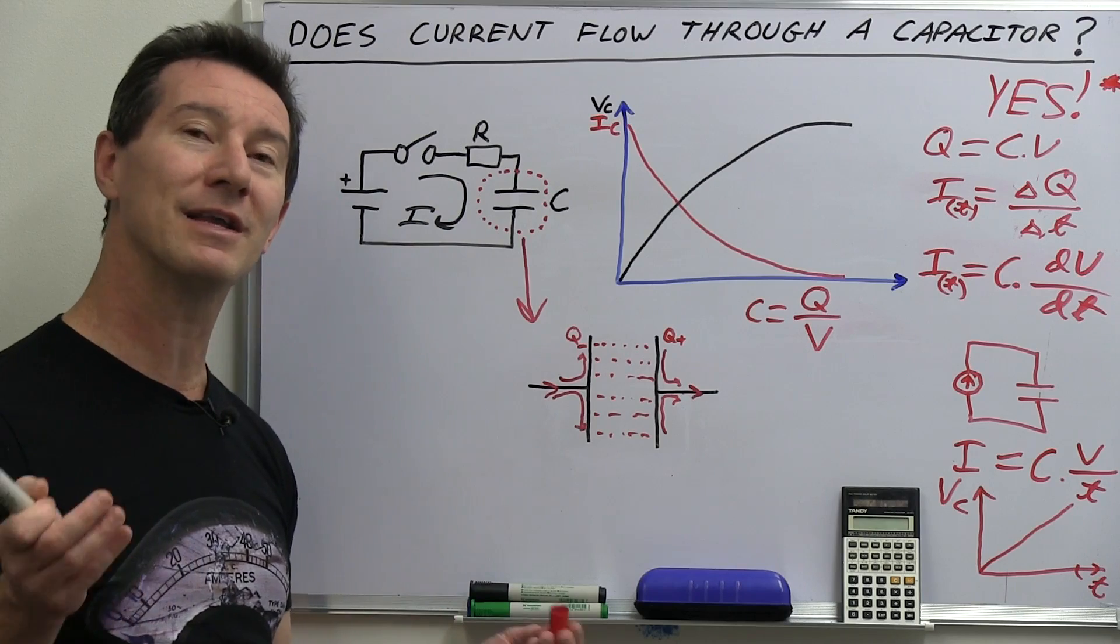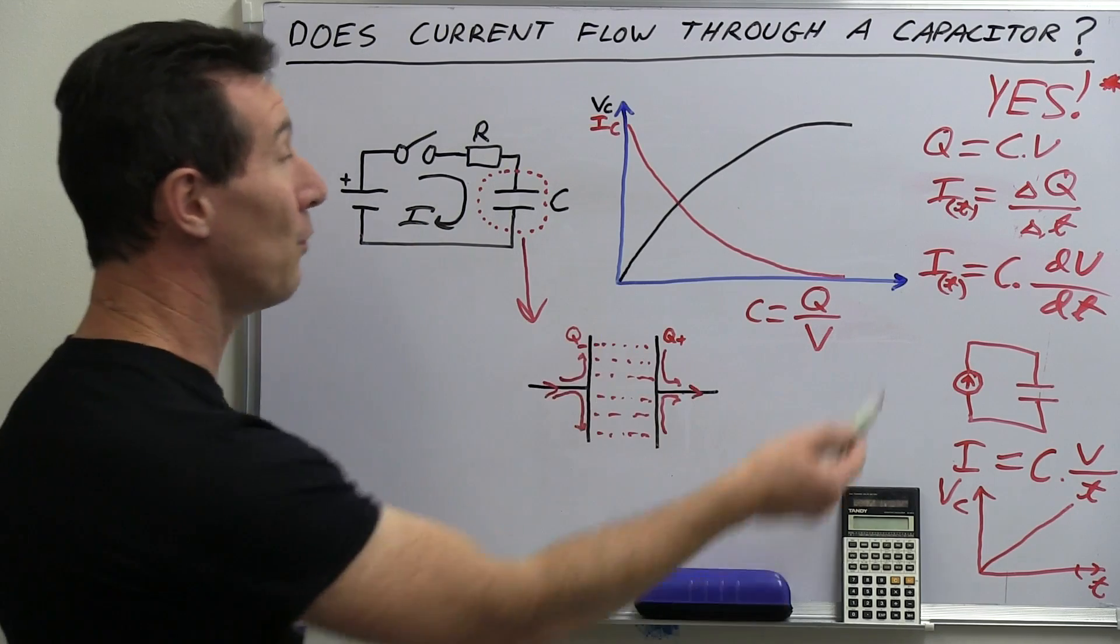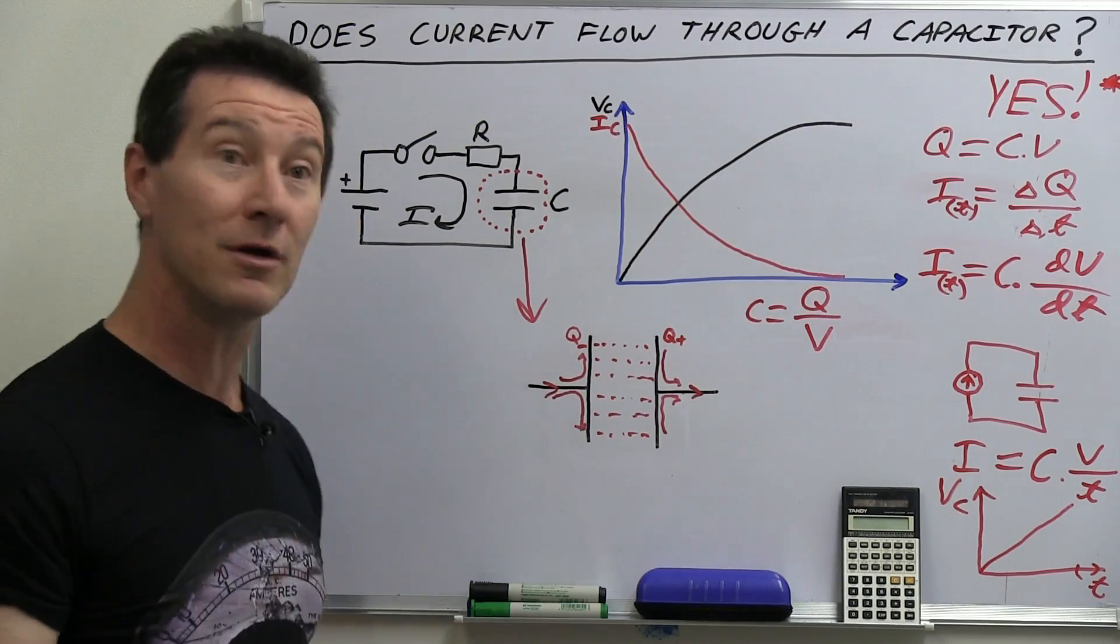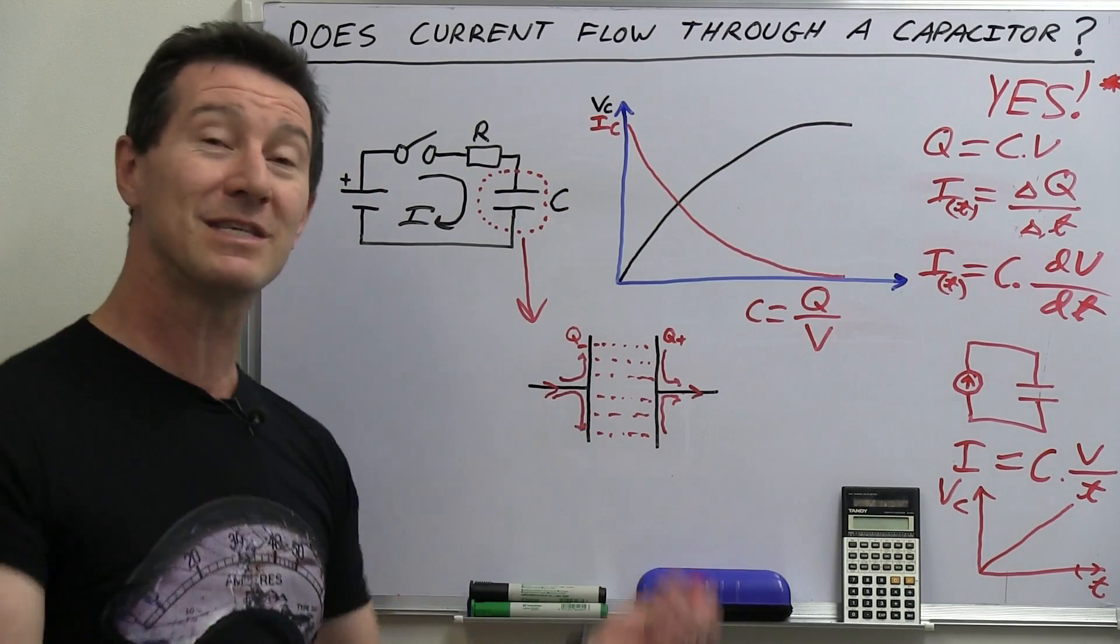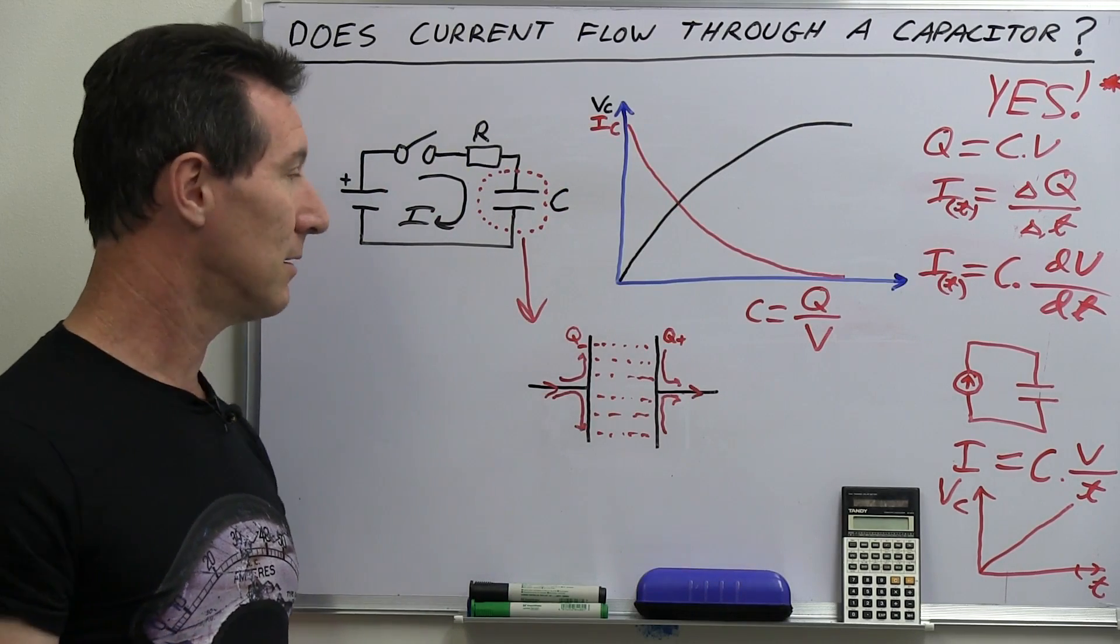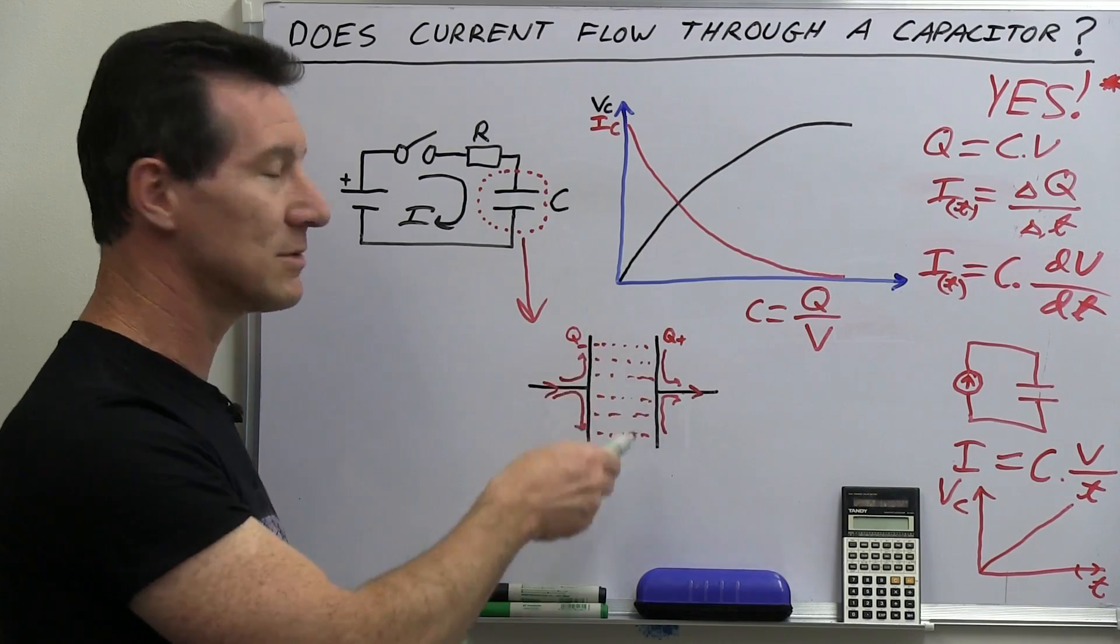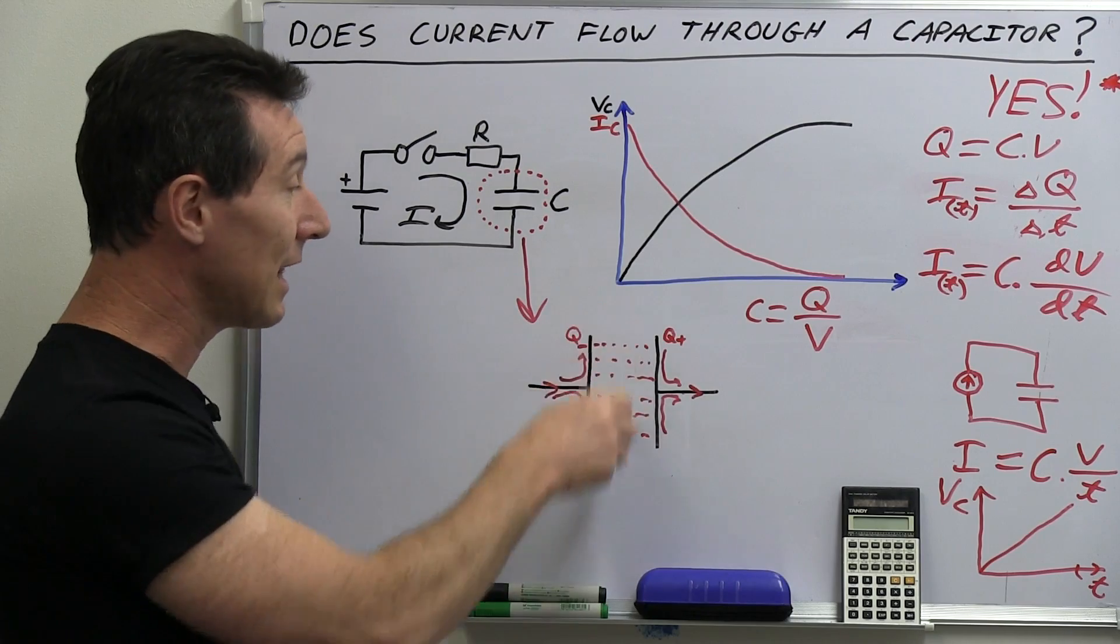So what's going on? How can current flow through a capacitor? It's sort of, you know, we know current flows through because it's a series circuit. And, well, you can actually measure it and you've got all the basic electronics 101 formulas that tell you current flows through a capacitor.